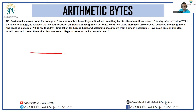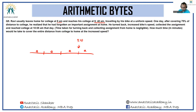Divide the journey into 4 equal parts of length 'a' each. Ravi leaves at 9 am and reaches at 9:40 am. After covering 3 parts (75 percent), three-fourths of the travel time has passed — so he is at the 3a mark at 9:30 am. He then turns back toward home.